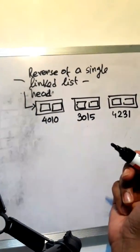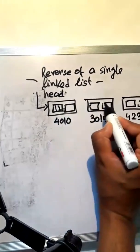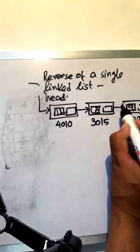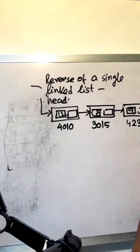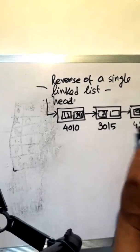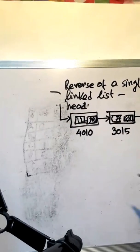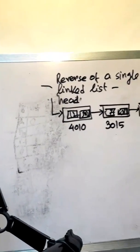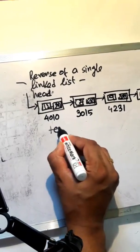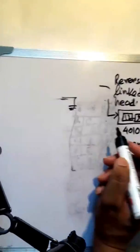This is the starting node point. The values in the linked list are 12, 7, 9, and 3. The starting node points to the next node at address 2091. We use this algorithm to reverse our linked list.